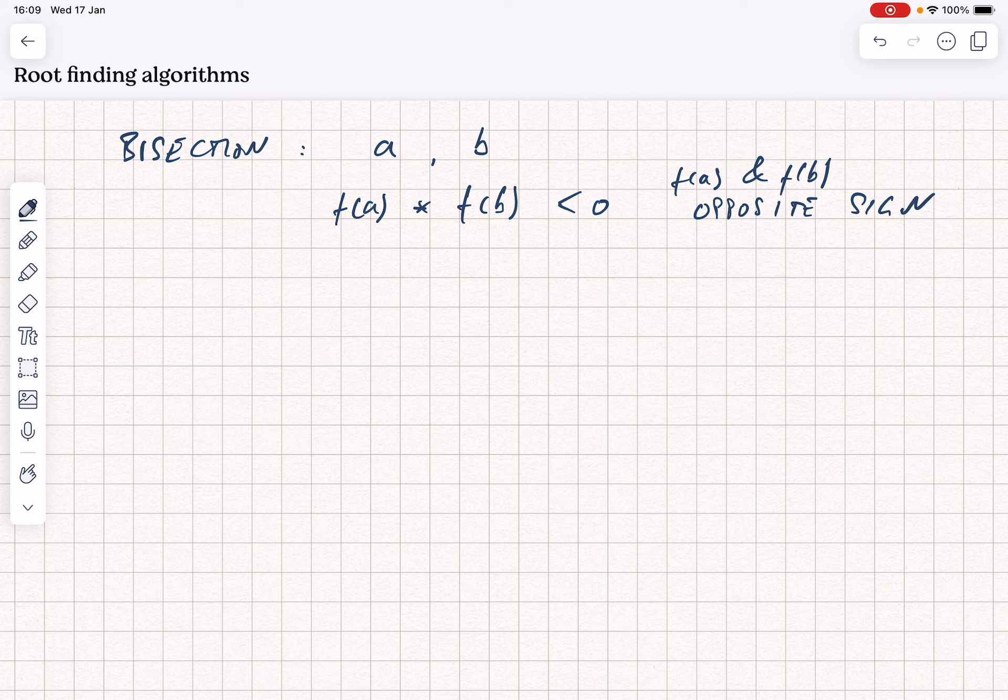If we are trying to find a root for a function, let's say it looks a little bit like this. Here's x, here's f(x), and here's our function going through here. If we put our two points, A and B, here and here, we are either side of the root, we have bracketed it.